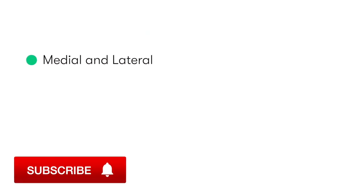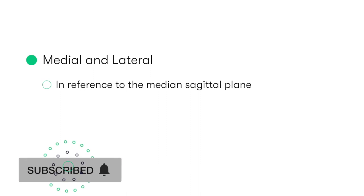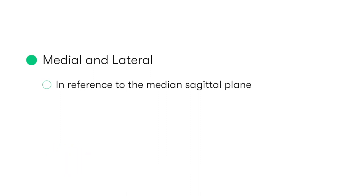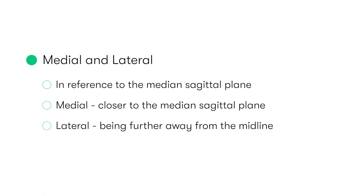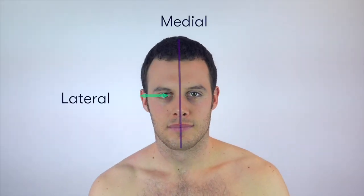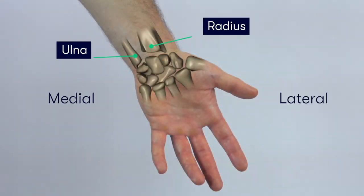The next terms, which are in reference to the median sagittal plane, are medial and lateral. Medial refers to something closer to the median sagittal plane, whereas lateral refers to something further away from this midline. For example, the right eye is medial to the right ear, which is in turn more lateral. The head of the radius is lateral to the head of the ulna when the arm is in the standard anatomical position.